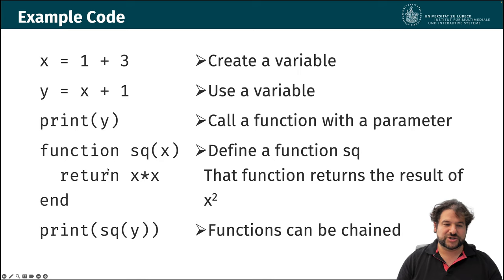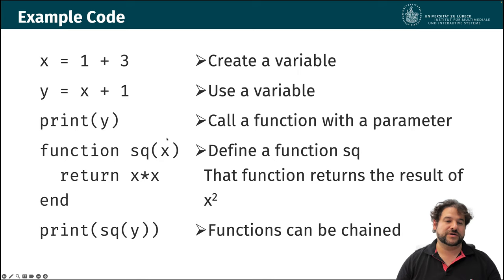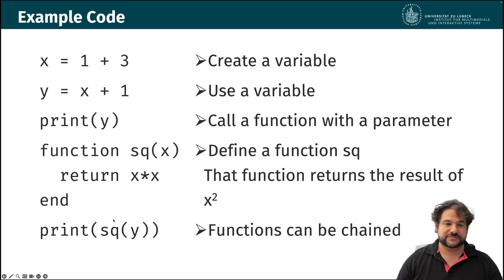The function knows it should do everything between the function line and the end line when called. This function only works if x is a number — we also have variables that store characters, for example, and for those this function would not work. Functions can also be chained together, so we can square the number y (which is 5), giving 25, and then print that — functions can be chained into one another to make use of results in another function.